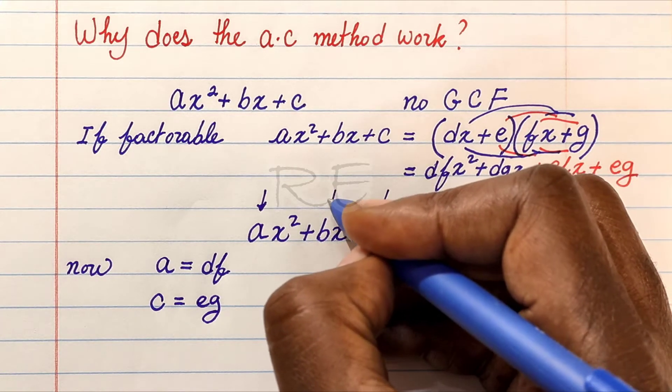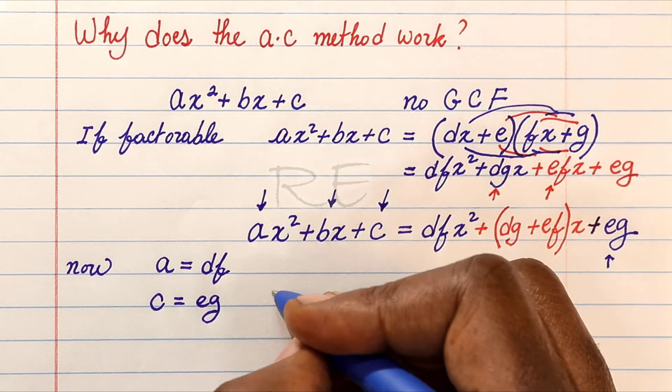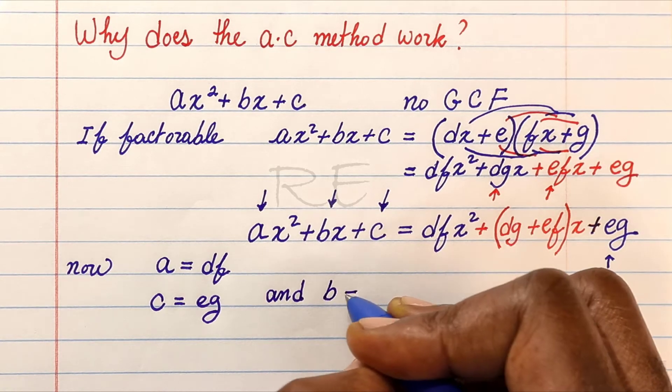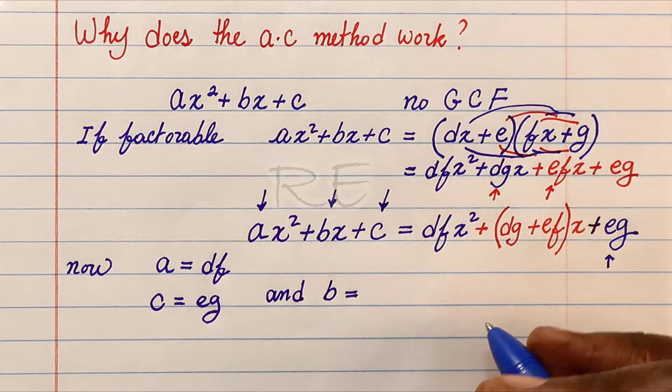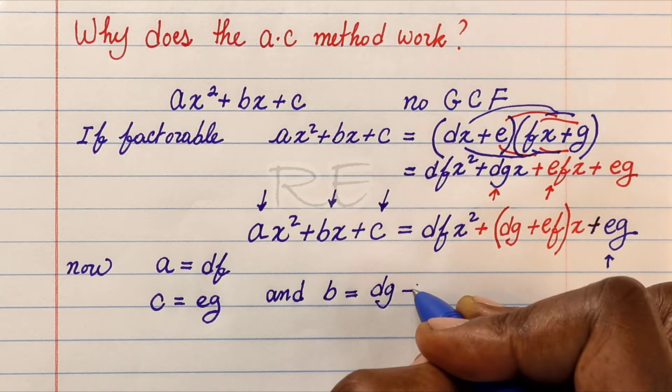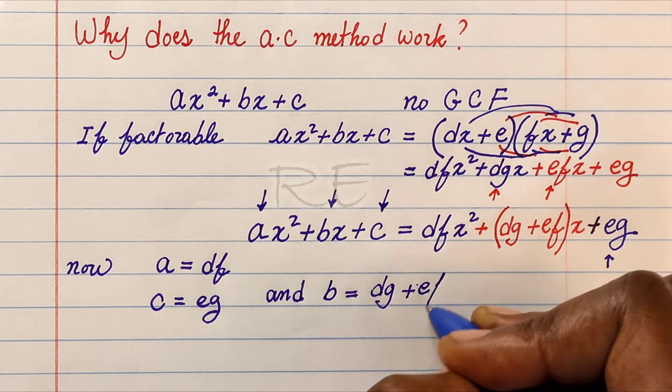And b, the coefficient of the middle term, the coefficient of x, will be equal to the sum of dg plus ef.